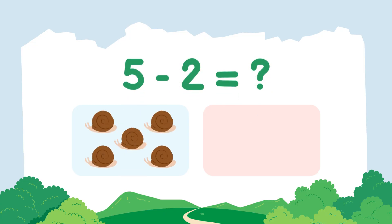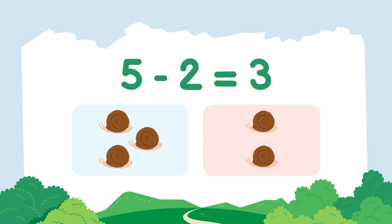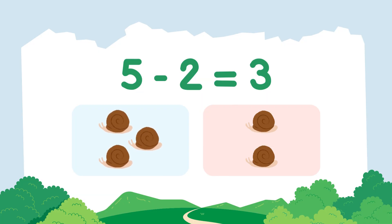5 gawak Manfi 2 gawak Masawi — 5 snails minus 2 snails equals 3 snails. Good job!